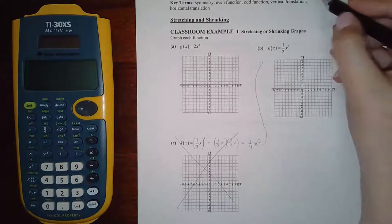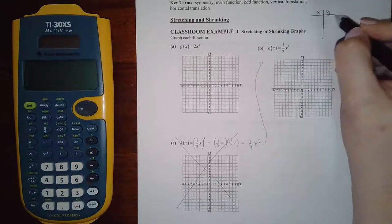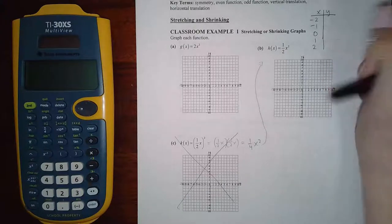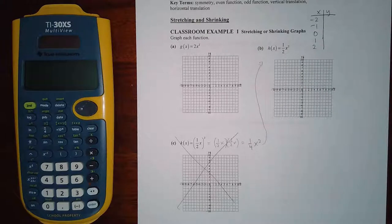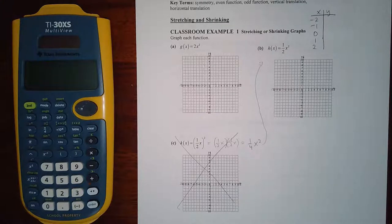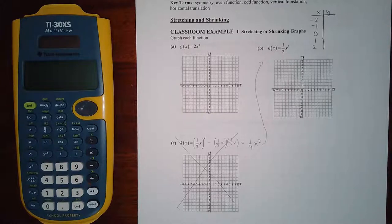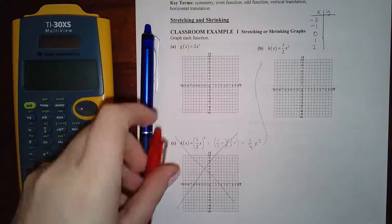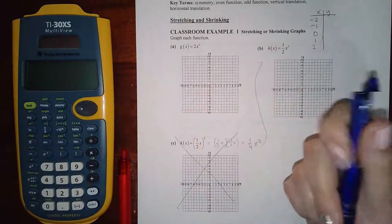If I draw the normal x squared, I remember from the basic functions they plugged in negative 2, negative 1, 0, 1, and 2. Let me grab my colored pencils so we can see the difference between what we have there and what we get when there's a 2 in front of it. I'm going to draw the original in blue and then draw the new one in red.